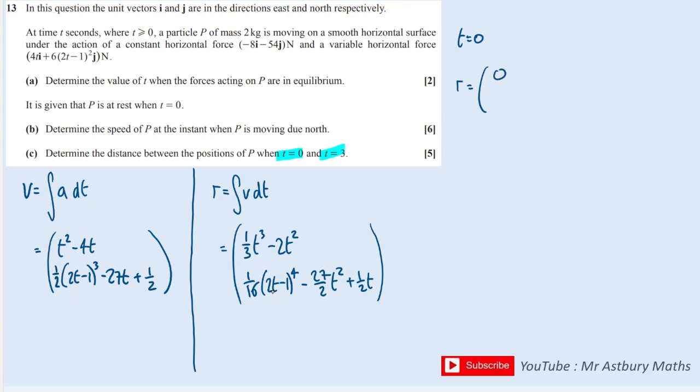If we sub in T equals 0, we get a position of 0, 0 at the top. This one won't be zero though, because it'll be minus 1 to the power of 4, which is 1 times by 16, so a sixteenth. Then all the rest will be zero. And when we sub in T equals 3, we will get minus 9 and minus 195 over 16 for the j.